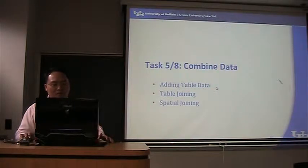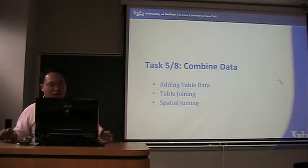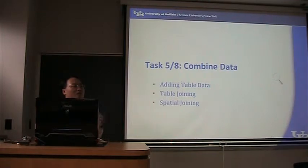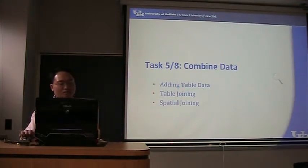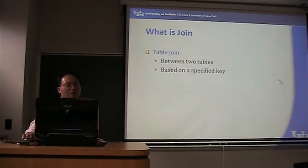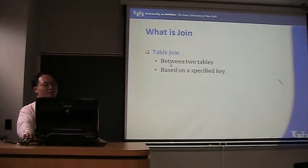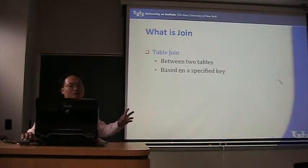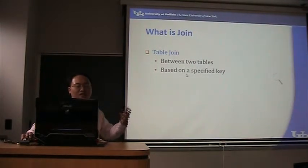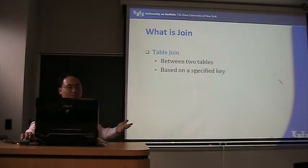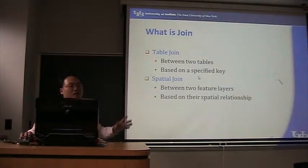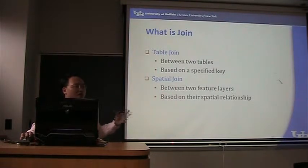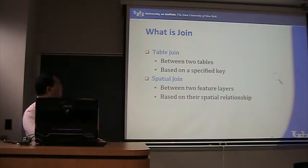The next one I'm going to talk about is combine data. So you have data, but they may be sparsely located on different datasets and you want to combine them. The formal word is called joining. Table join is between two tables based on the specified key field. Another way is spatial join, between two feature layers or vector layers based on their spatial relationship.